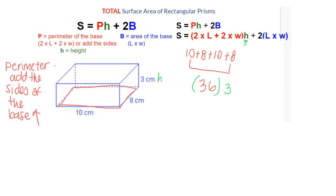Next, I'm going to find the second part of my formula, which is plus 2 times the area of the base. The area of the base is just going to be 10 times 8 because it's a rectangle.